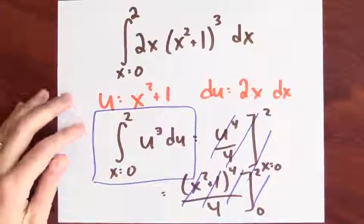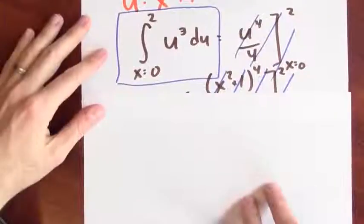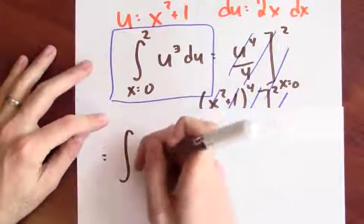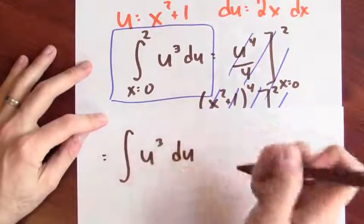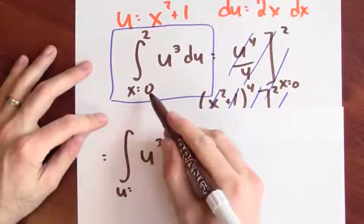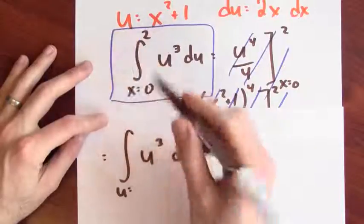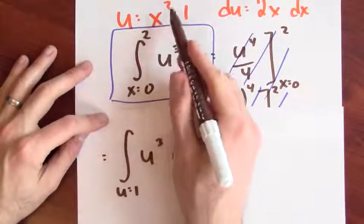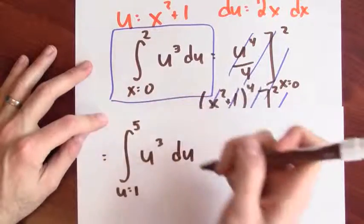Instead, I'll see that that integration problem is the same as the integral of u cubed du, and when x is equal to 0, u is 1. And when x is equal to 2, u is 2 squared plus 1, which is 5. So if I change the endpoints to be in terms of u, then I don't have to go back to x.